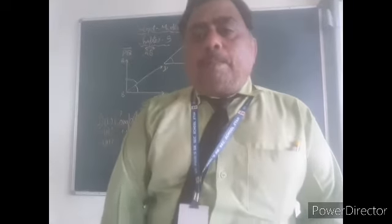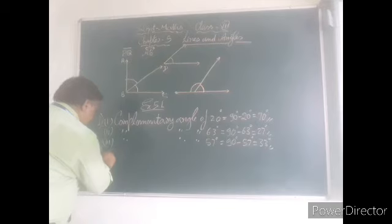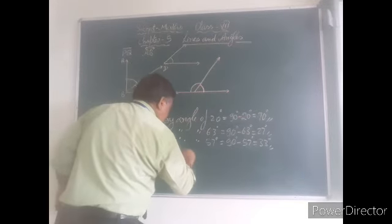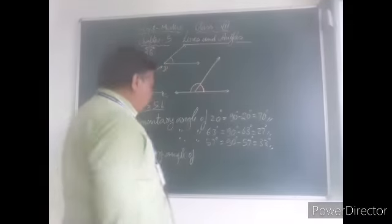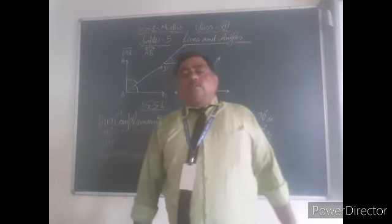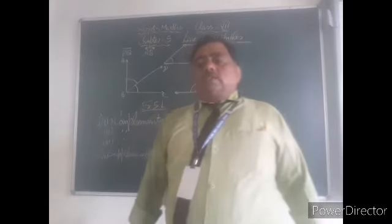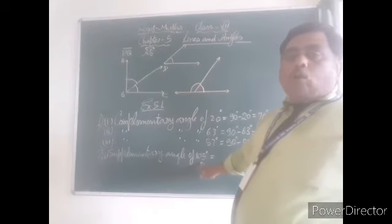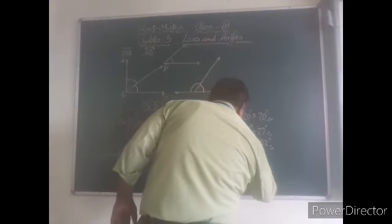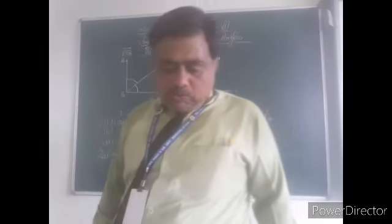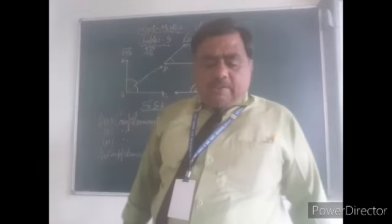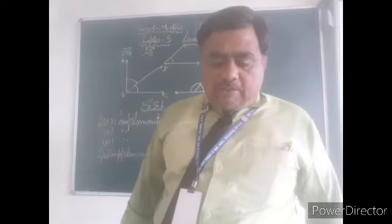Now, supplementary angle — question number 2. First one: supplementary angle of 105 degrees. If the sum of the angles is 180 degrees, then those angles will be supplementary angles. So subtract 105 from 180 degrees: 180 minus 105 equal to 75 degrees. Similarly, you do the second and third parts: 180 minus 87 degrees, and 180 minus 154 degrees.